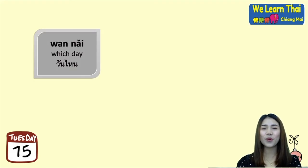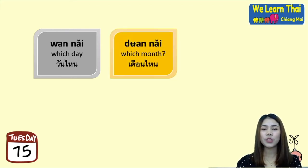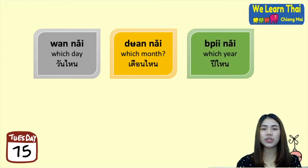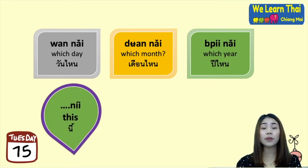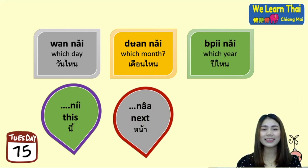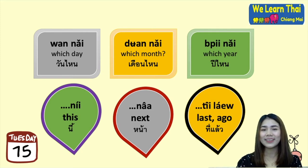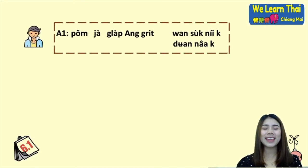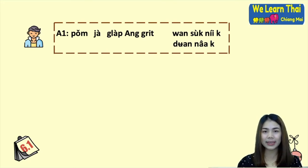Next, we have more question words. When you want to specify which day, month, or year, you can say: วันไหน (wan nai) — 'which day,' เดือนไหน (deuan nai) — 'which month,' or ปีไหน (pii nai) — 'which year.' To talk about the present use นี้ (nii), for the future use หน้า (na) meaning 'next,' and for the past use ที่แล้ว (tii laew) meaning 'last' or 'ago.' For example: ผมจะกลับอังกฤษวันศุกร์นี้ครับ — 'I will go back to England this Friday,' or ผมจะกลับอังกฤษเดือนหน้าครับ — 'I will go back to England next month.'